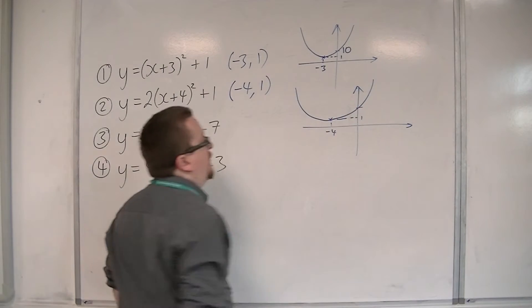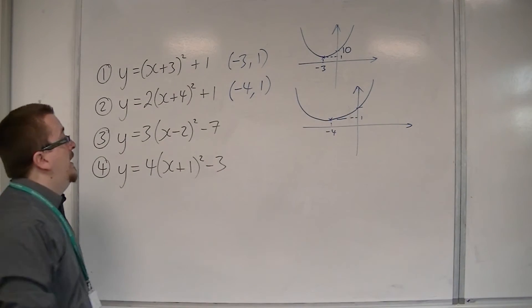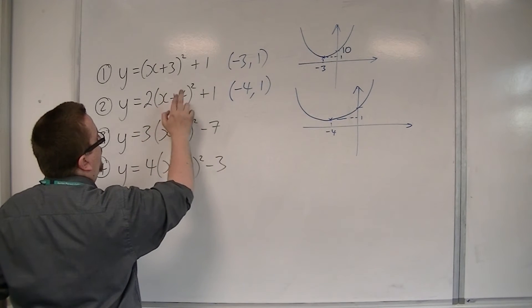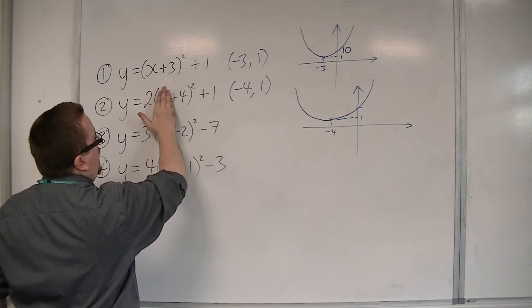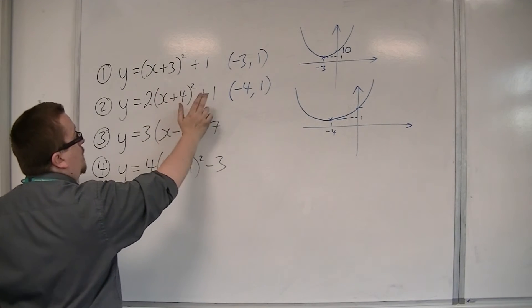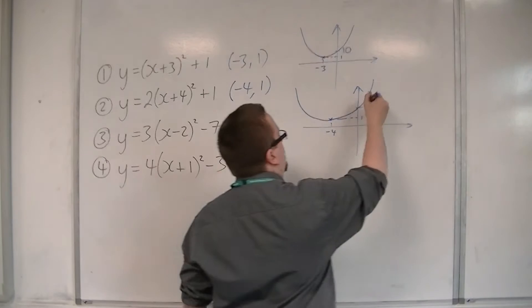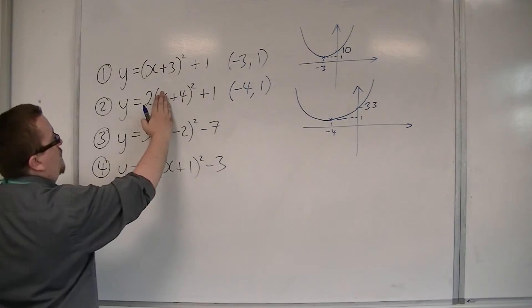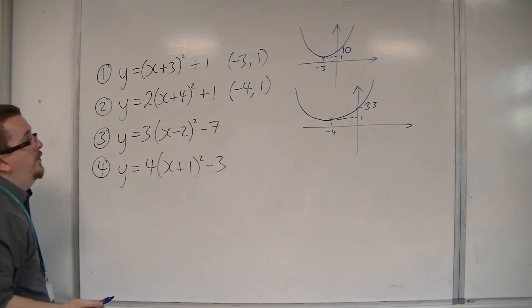And I'm interested in where it crosses the y-axis. So that's when x is 0. So if I cover up the x, I get 2 lots of 4 squared. So 4 squared is 16, 2 lots, that's 32. Plus the 1 is 33. So make sure you do the squared bit first, then multiply by 2.